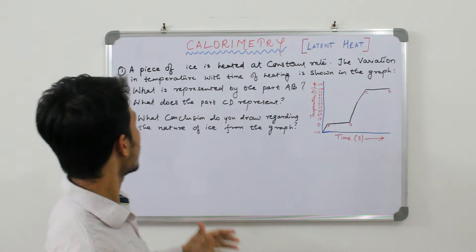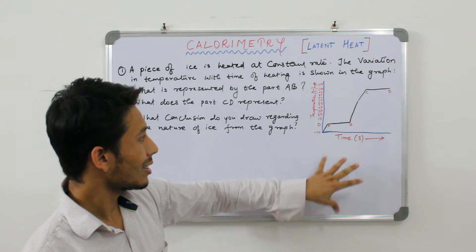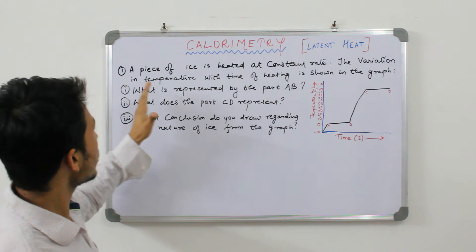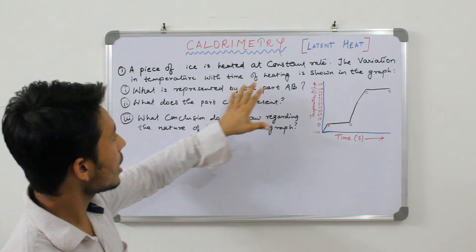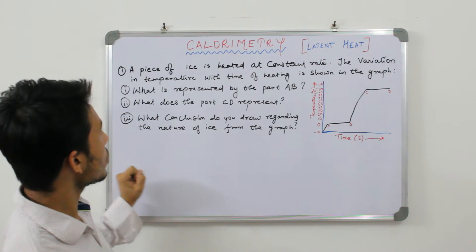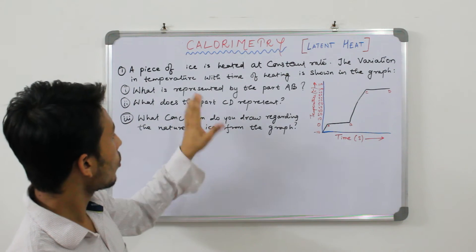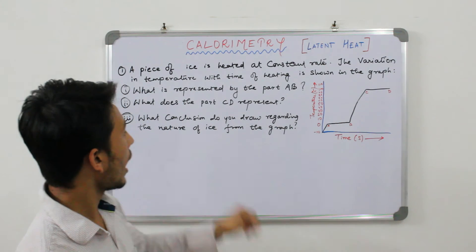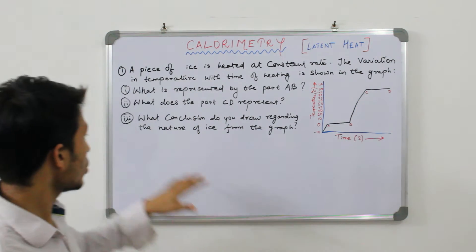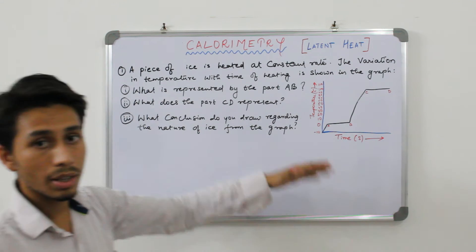The first problem gives a concept of the heating curve. A piece of ice is heated at a constant rate. The variation in temperature with time of heating is shown in the graph. You have to say what is represented by part AB and what is represented by part CD. Also, what conclusion can you draw about the nature of ice from the graph?